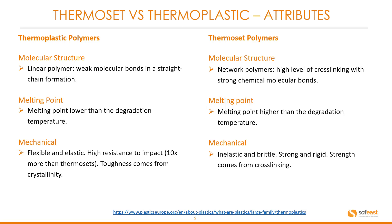Molecular structure. For the thermoplastic, it is a linear polymer with weak molecular bonds in a straight chain formation. Whereas thermosets are network polymers — these have a high level of cross-linking with strong chemical molecular bonds.